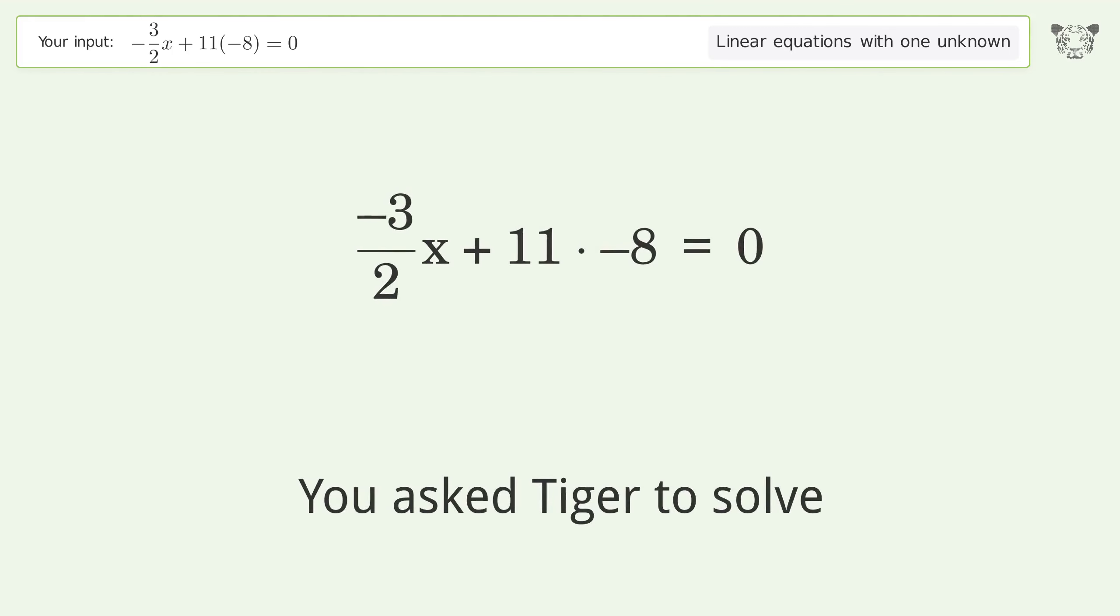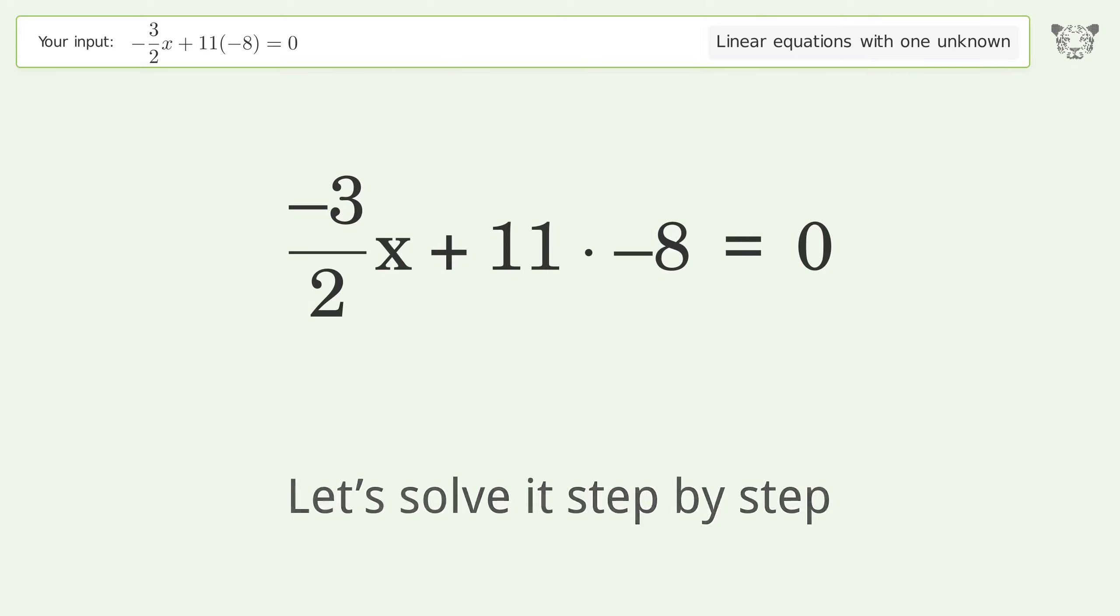You asked Tiger to solve this. Deals with linear equations with one unknown. The final result is x equals negative 176 over 3. Let's solve it step by step. Simplify the expression.